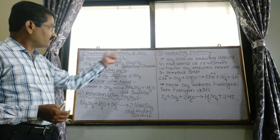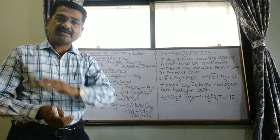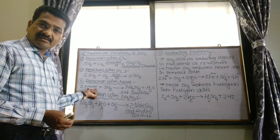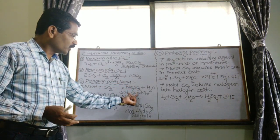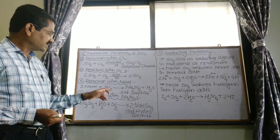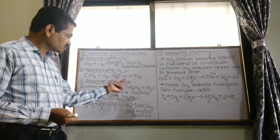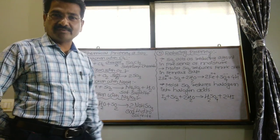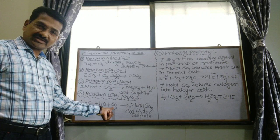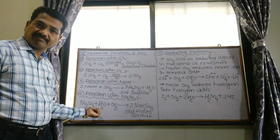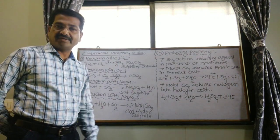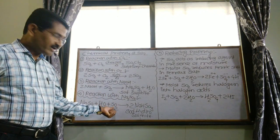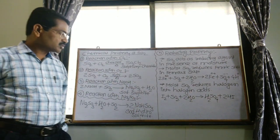Third chemical property: sulfur dioxide reacts with sodium hydroxide, which is a base, to produce sodium sulfite. Sulfur dioxide reacts with alkali, that is sodium hydroxide, to form sodium sulfite. Next, the reaction with sodium sulfide — when sulfur dioxide reacts with sodium sulfide in aqueous medium, it produces sodium hydrosulfide.